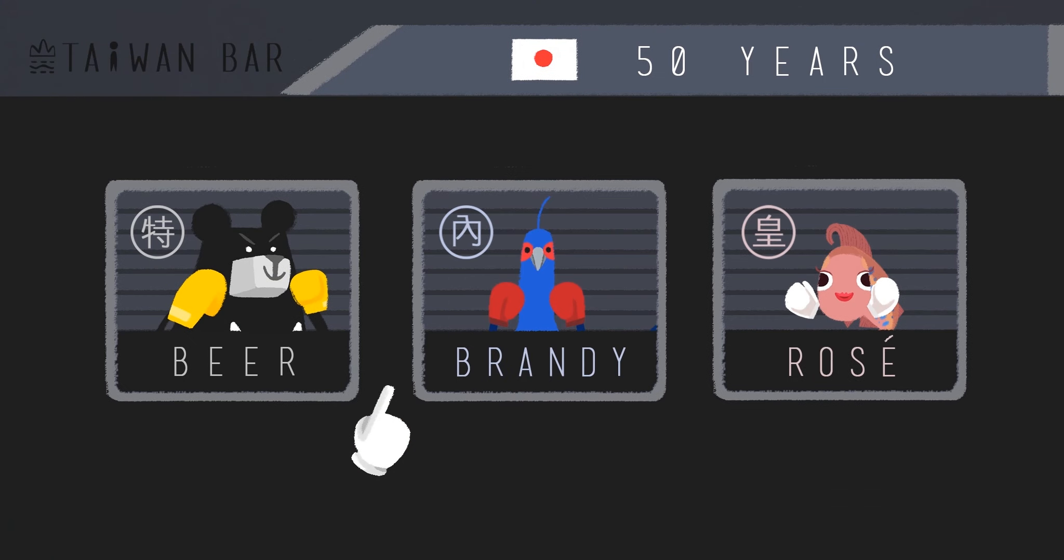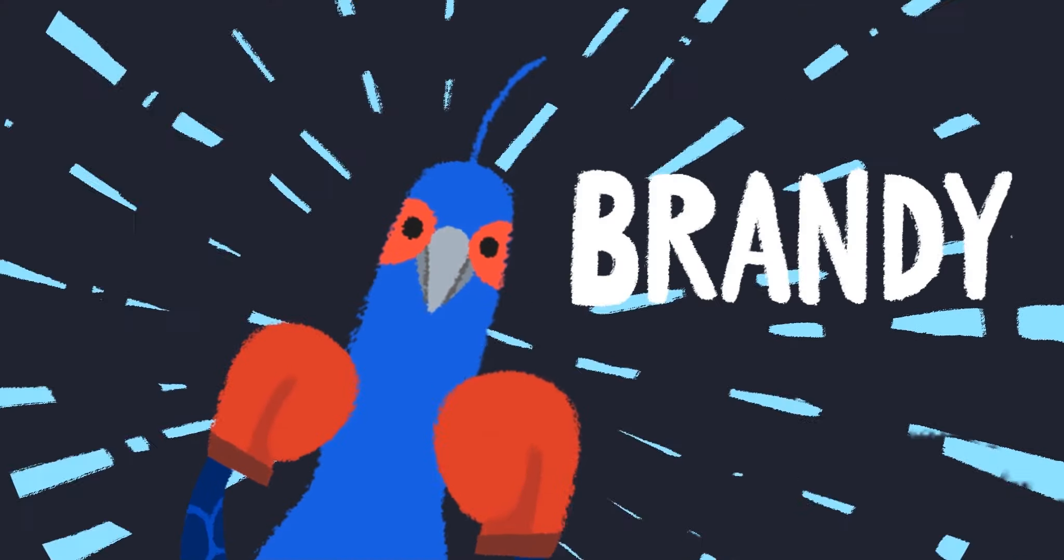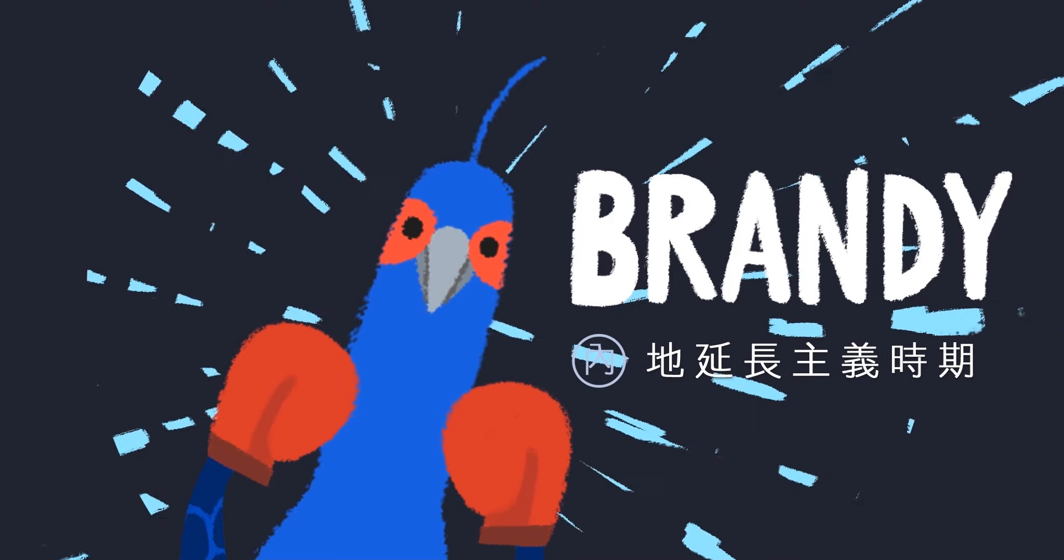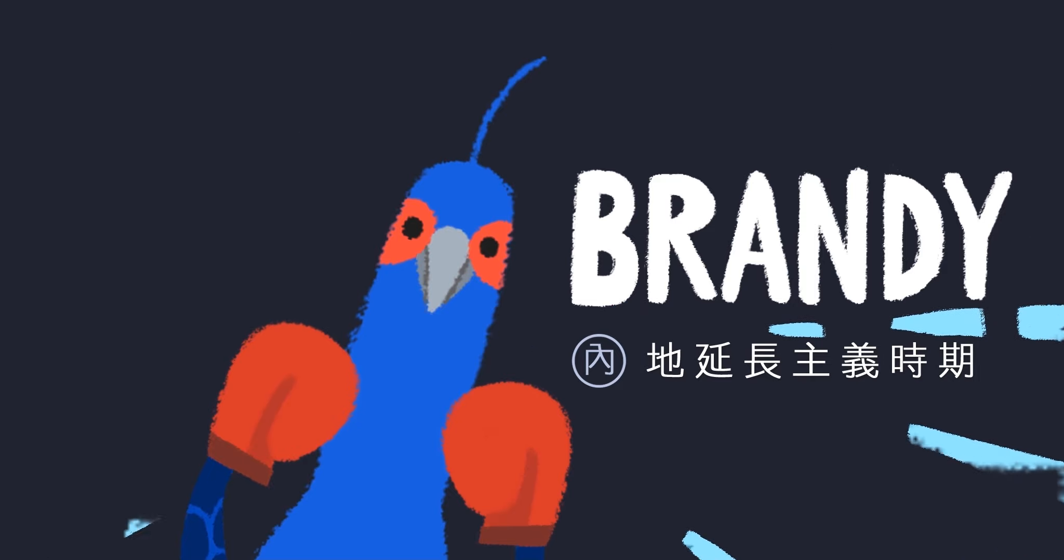In each period, Japan ruled in a different way, so it's been debated whether the Japanese rule was good or bad for Taiwan. But today, let's just focus on how the special ruling period transformed into the assimilation period, aka the extension of Japan proper! What exactly was extended, and how did it extend?